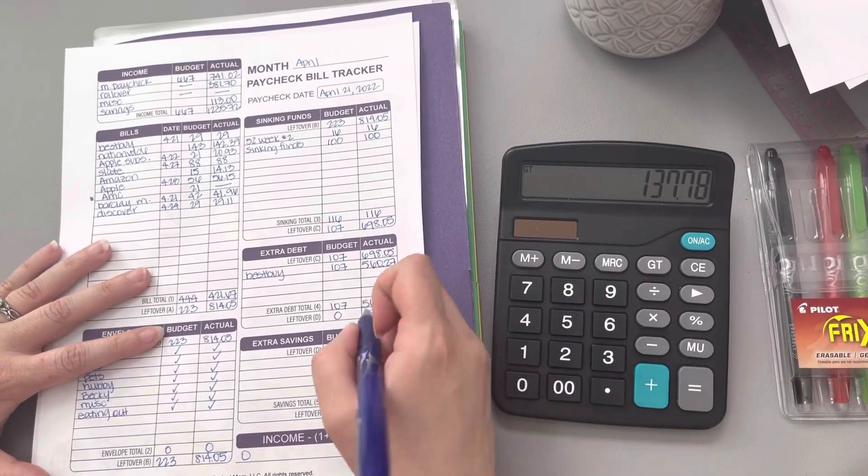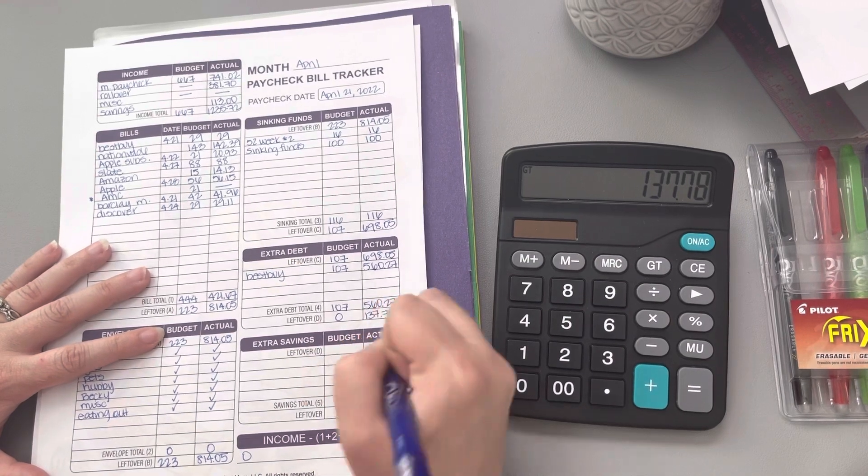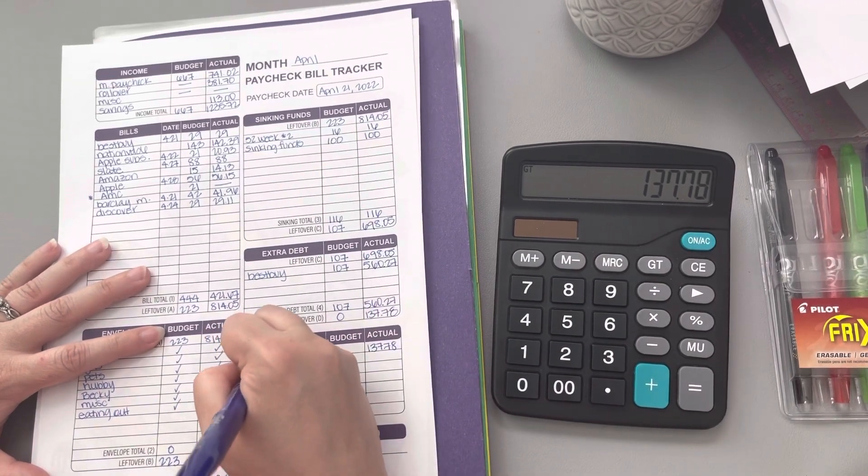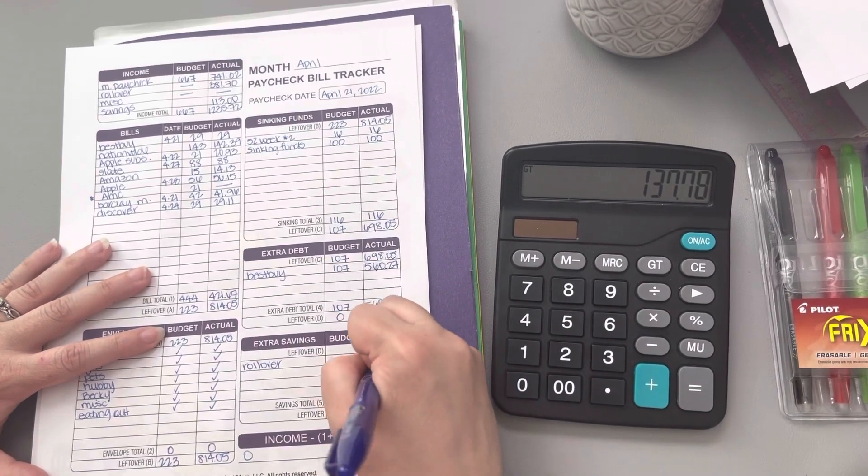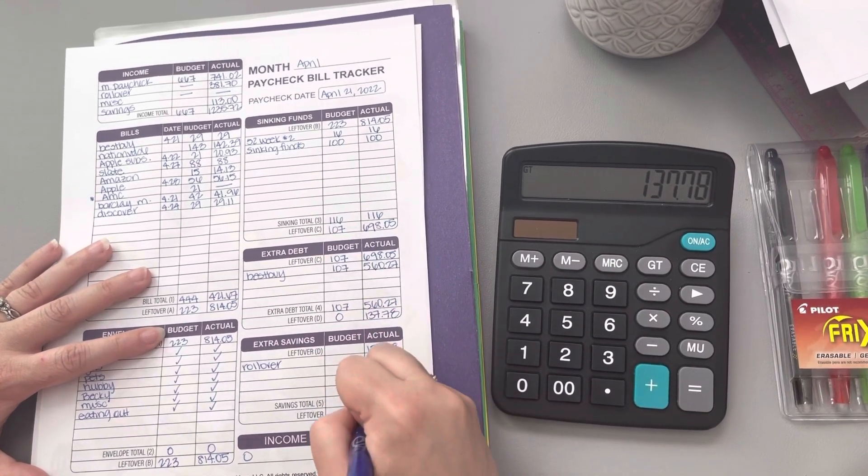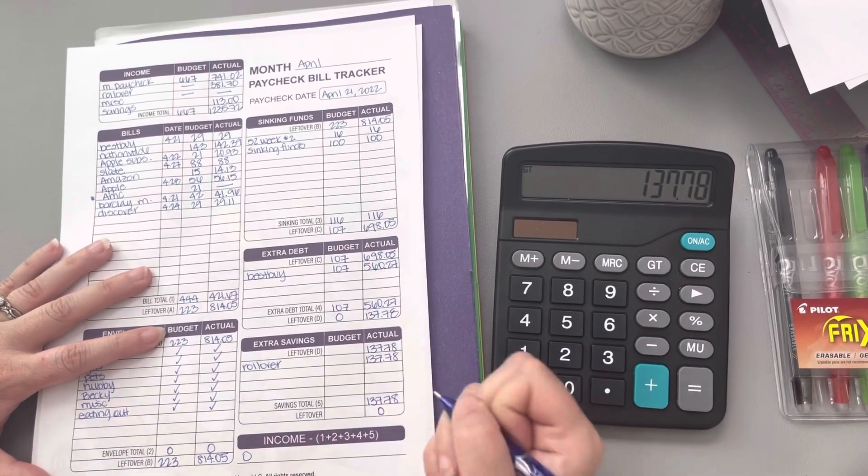So we're actually going to be rolling that money over. So we'll roll it over, and then once we bring that down, we get our zero-based budget.